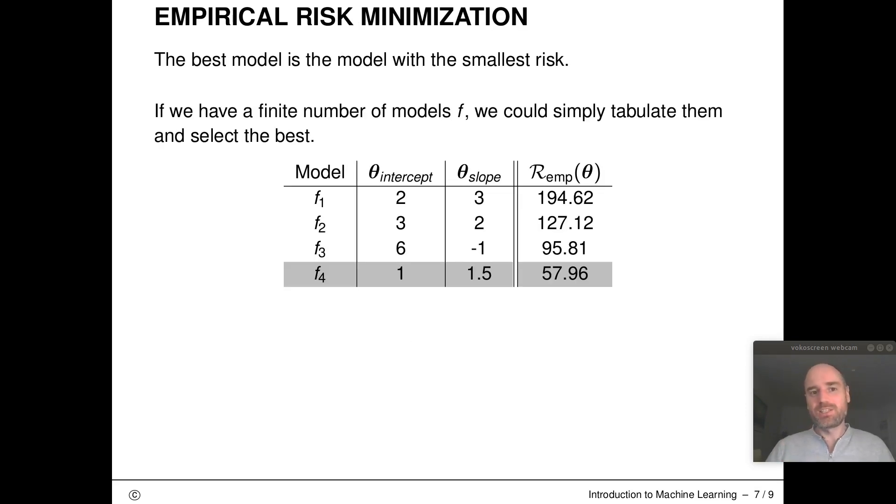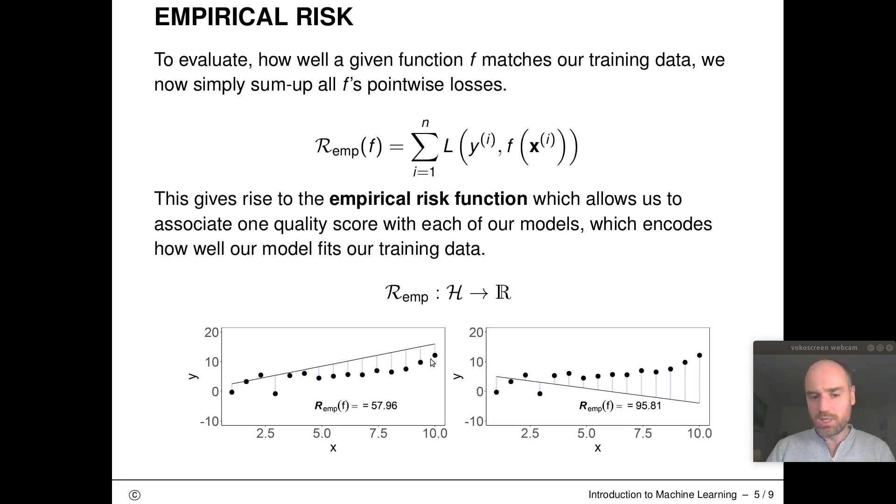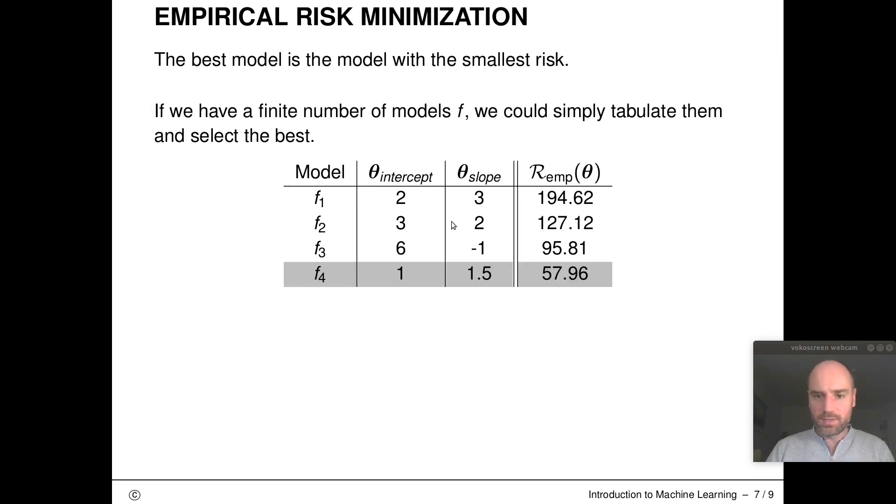So if we are looking for the best model with the smallest risk and we have only a finite amount of models available, we could simply tabulate them. Here I'm using this simple situation where I have linear functions defined by an intercept and a slope. I've tabulated these guys here in this table, and in this last column the empirical risk of these four models. By eyeballing the table you can figure out that this here is our best model.